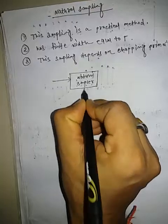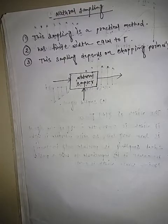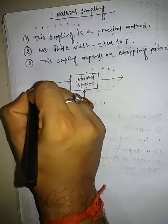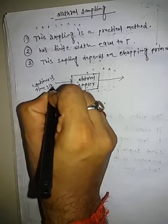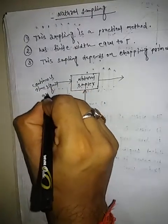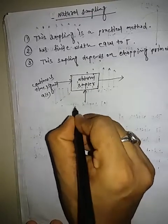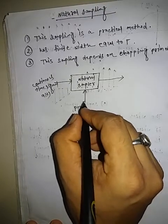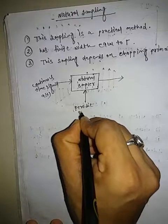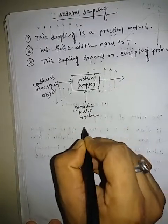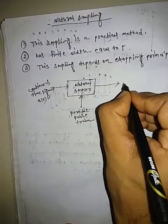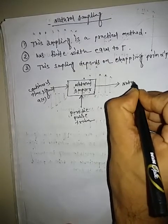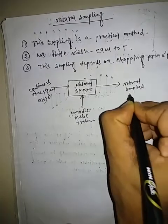Here two signals are input. The first input is a continuous time signal, denoted by XT. The second input is a periodic pulse train, which has a finite width. The output is the natural sampled signal.